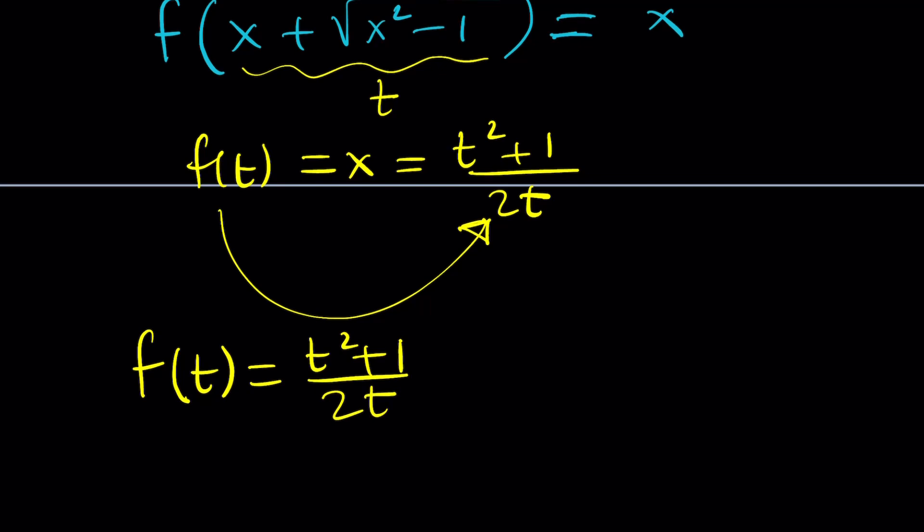Of course, you can talk about the domain and range of this function. Obviously, t equals 0 is not allowed. What would that mean in the original functional equation? You know, you can talk about all those things. But that's what it is.